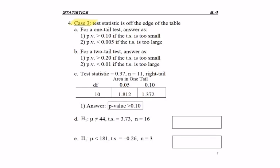And so our final case, case 3, is where the test statistic is off the edge of the table. Well, it's not even on the table. It would be listed, but we've hit an edge of the table, the left or the right side.